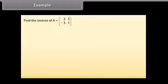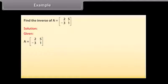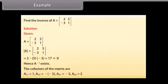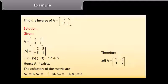Example: Find the inverse of A with first row [2, 5] and second row [−3, 1]. Solution: det(A) = 2 − 5×(−3) = 17 ≠ 0, so the inverse exists. Cofactors: A11=1, A12=3, A21=−5, A22=2. Therefore adj(A) has first row [1, −5] and second row [3, 2]. Inverse of A = (1/17) × [[1, −5], [3, 2]].